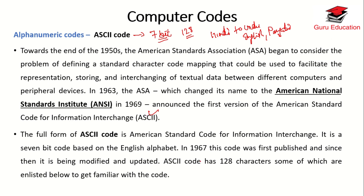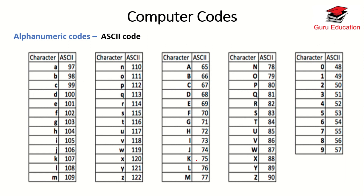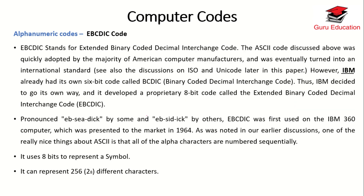ASCII code has 128 characters, some of which are listed below. This 7-bit code was first published in 1967 and has since been modified and updated. ASCII has 128 codes — for example, if you want to write digits, there is a specific ASCII code. For capital letters and small letters like a, b, c, the codes range from 90 to 122. If you write 'z', the computer understands it as 122.